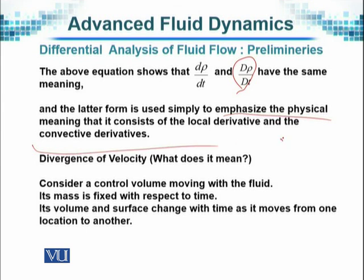Then we come to what is the divergence of velocity. Del dot v is known as the divergence of velocity. The quantity on the right-hand side of the equation can be written in a form that reflects this divergence of velocity term, which we will consider in detail later.